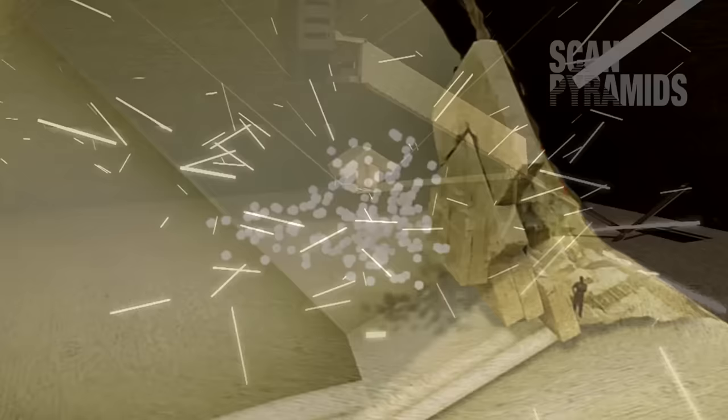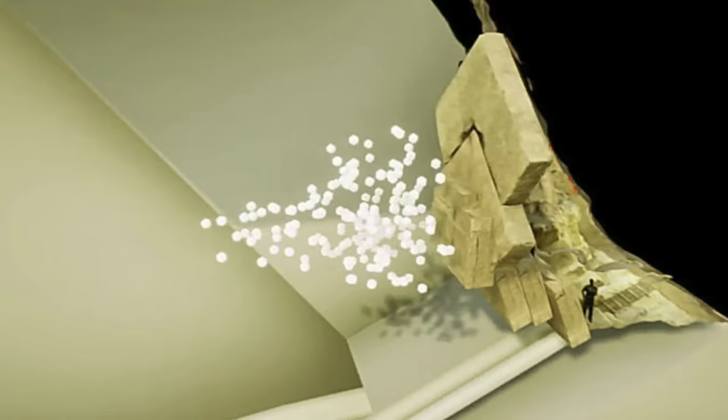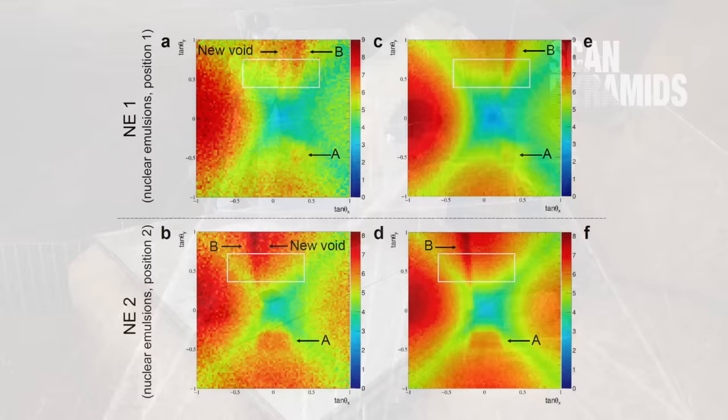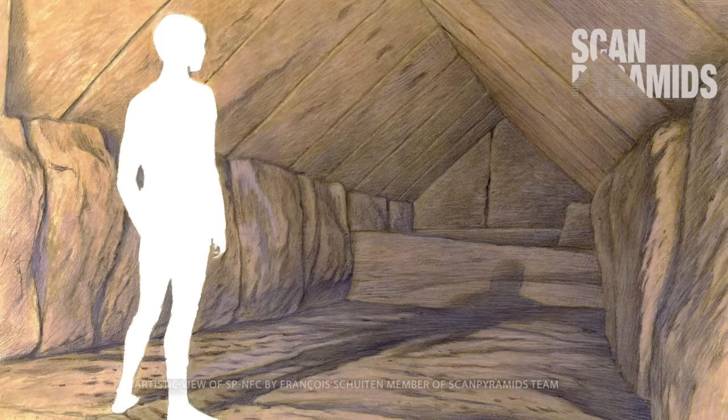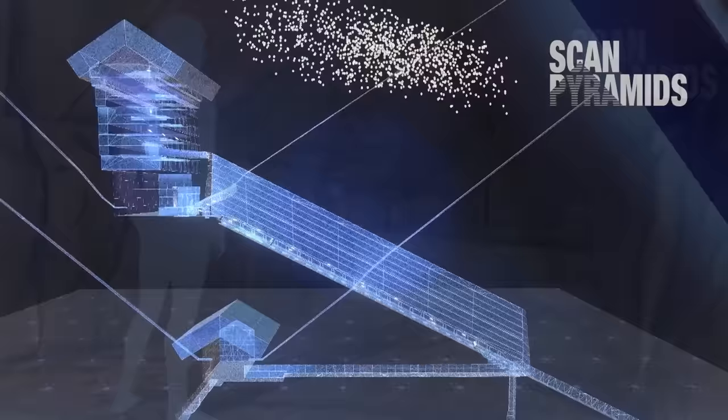Anyway, as we know, the ScanPyramids team did successfully find the small void using this technique, proving that Muography does work in the Great Pyramid. And although yes, the technology does need refining and improving to increase the accuracy of the resulting image, for now, we know it does do what it's meant to do. It can find hidden voids in pyramids. And furthermore, scientists are now certain of the big void's existence.